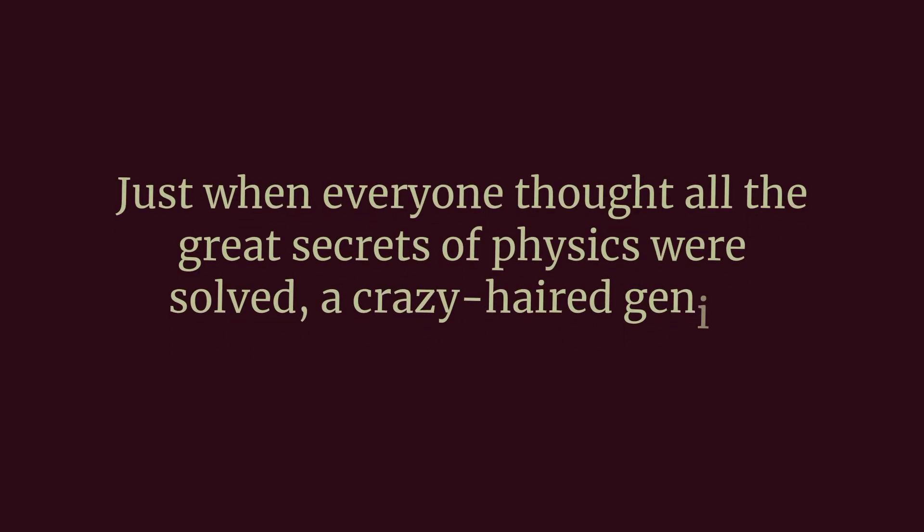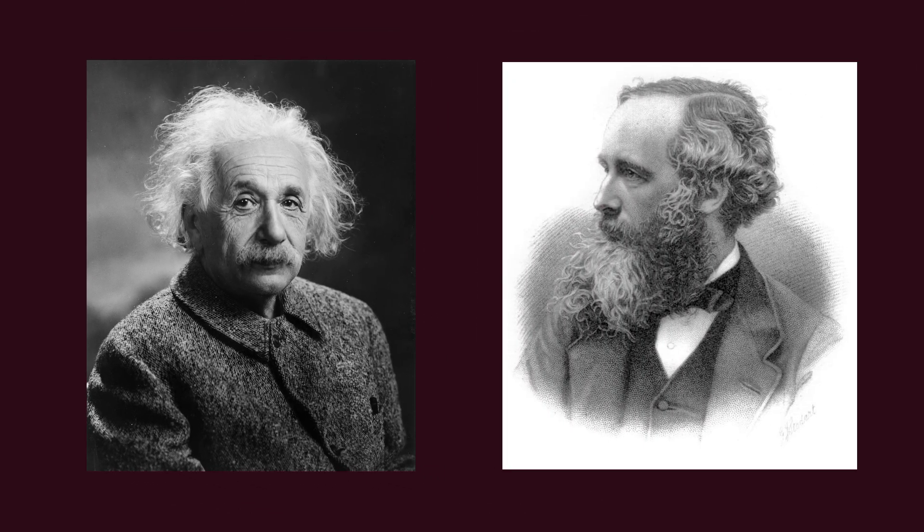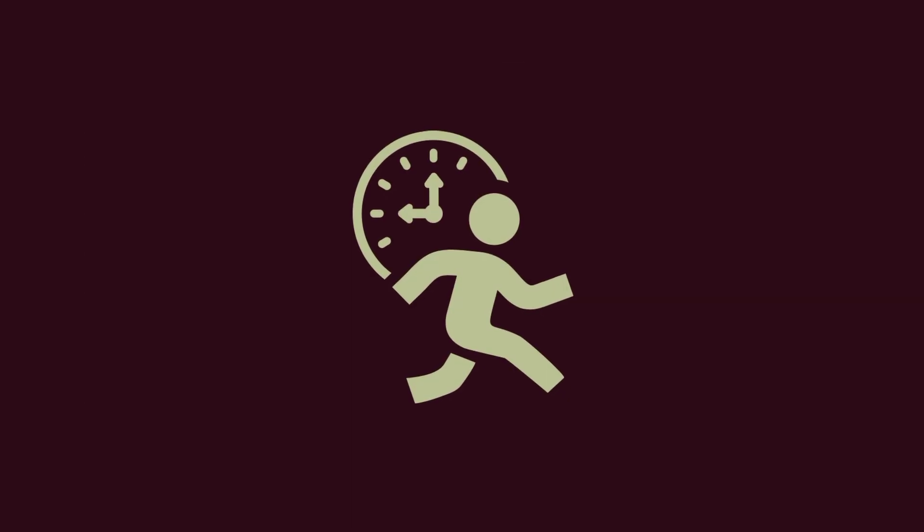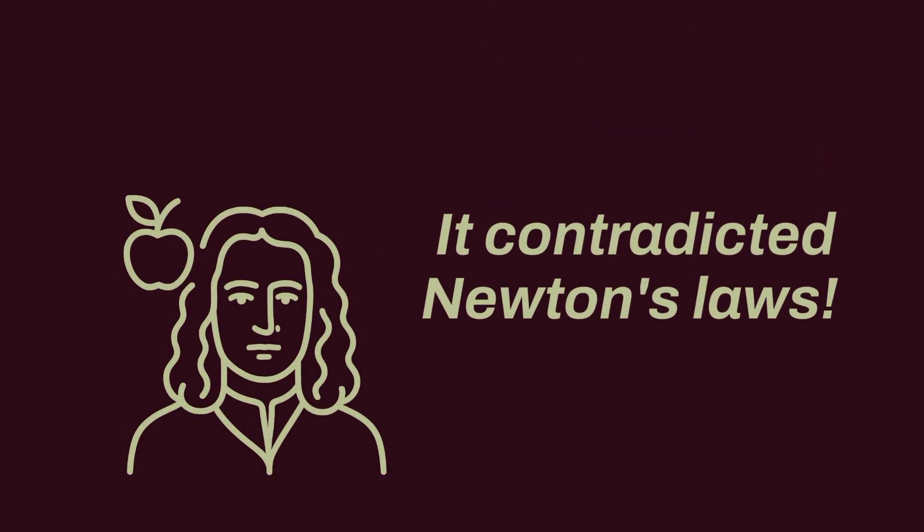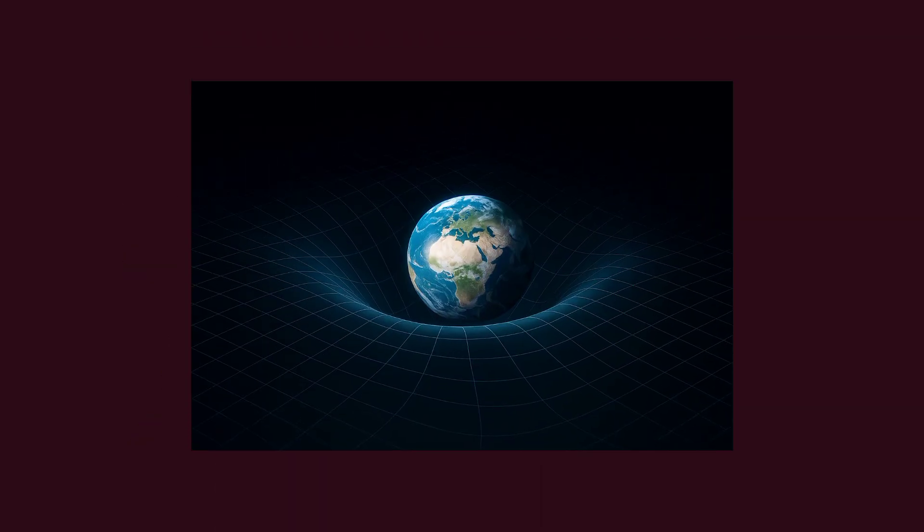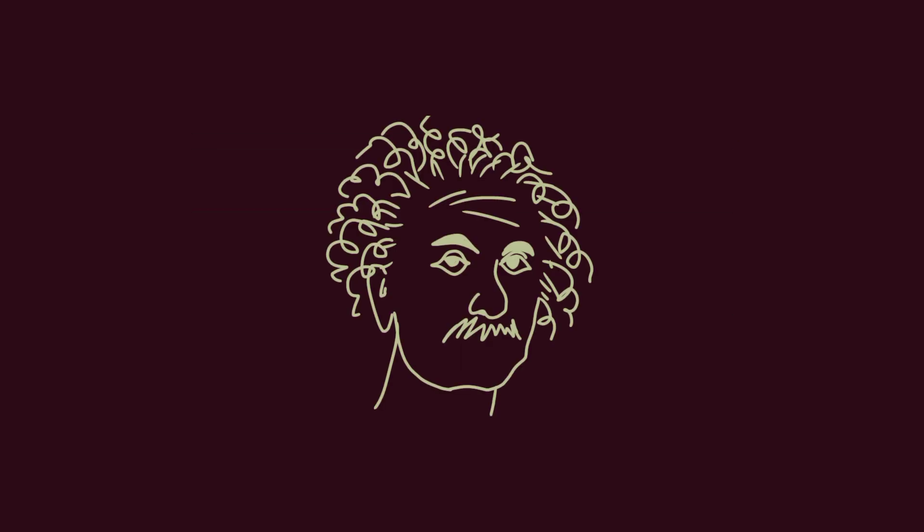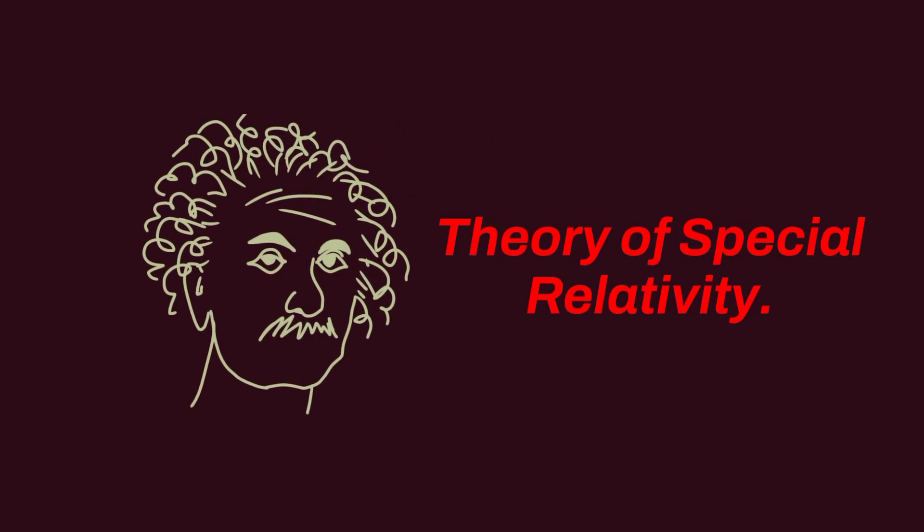Just when everyone thought all the great secrets of physics were solved, a crazy-haired genius stepped onto the stage. Albert Einstein. He was obsessed with Maxwell's discovery about the speed of light. He said that the speed of light was always the same, everywhere, for every observer. What did this mean? It contradicted Newton's laws. If the speed of light was constant, then time and space couldn't be. To solve this problem, Einstein put forth his theory of special relativity.